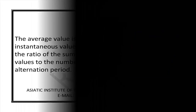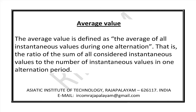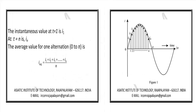Average value: The average value is defined as the average of all instantaneous values during one alternation — that is, the ratio of the sum of all considered instantaneous values to the number of instantaneous values in one alternation period. The instantaneous value at t=1 is i1, and at t=n is in. The average value for one alternation (0 to π) is: i_average = (i1 + i2 + i3 + ... + in) / n.